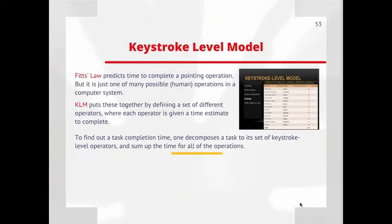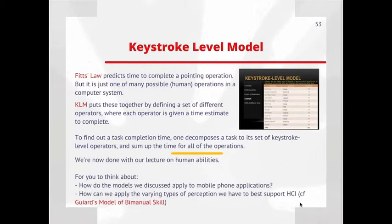At this point, we're done with our lecture on human abilities. For you to think about is: which models we discussed, and how they would apply to different platforms. We were talking largely in the '80s and '90s about desktop applications that come at personal workstations, but now that our computing devices are no longer bound to the desktop, we have to do some thinking about whether these models still apply and how they might be adapted.